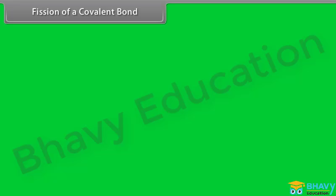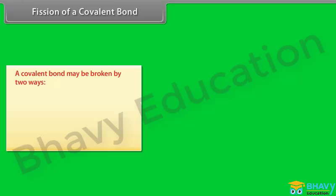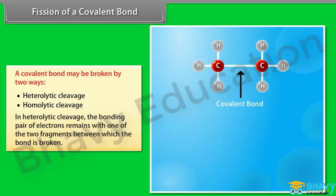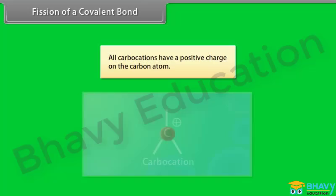A covalent bond may be broken in two ways: heterolytic cleavage and homolytic cleavage. In heterolytic cleavage, the bonding pair of electrons remains with one of the two fragments between which the bond is broken. For example, all carbocations have a positive charge on the carbon atom.